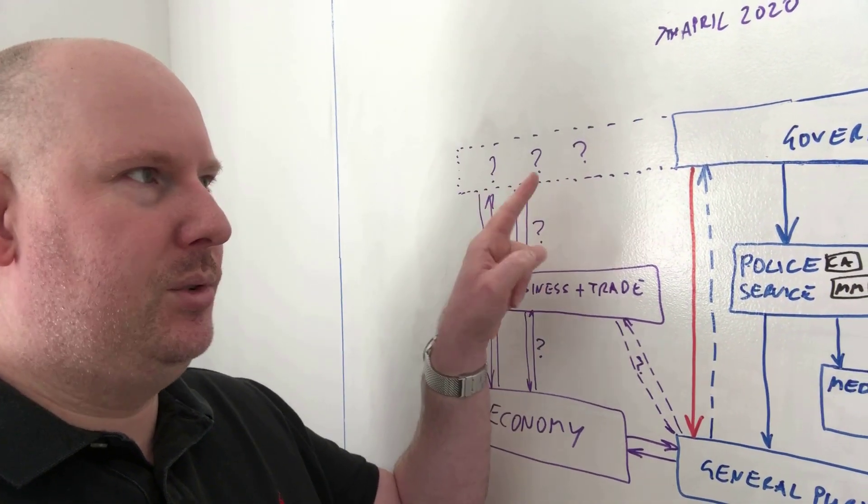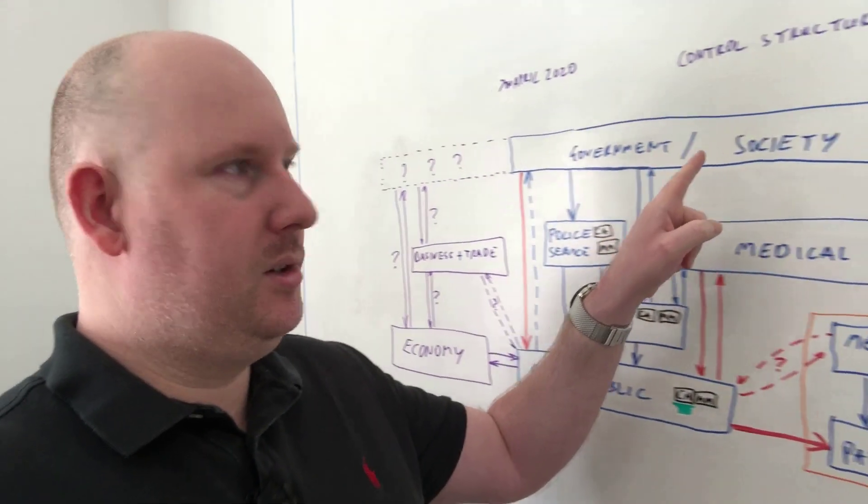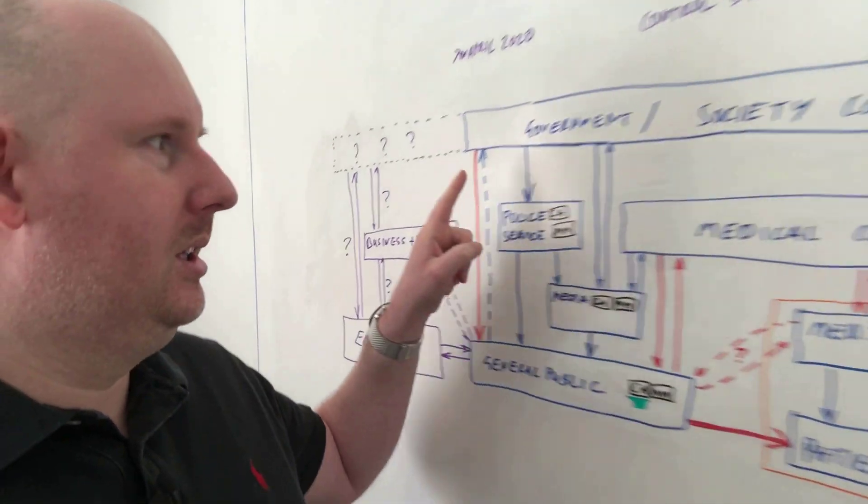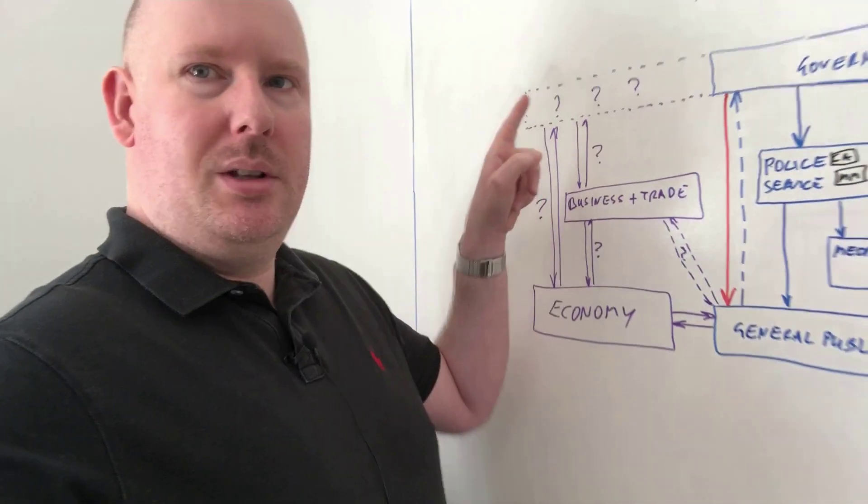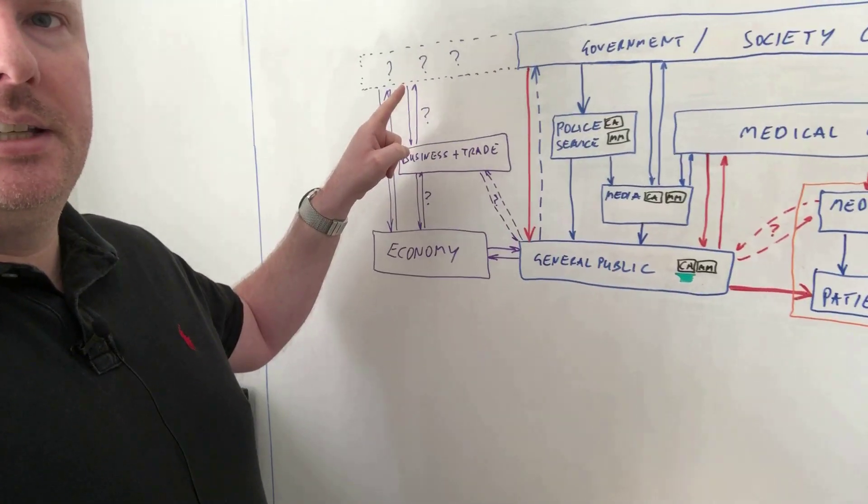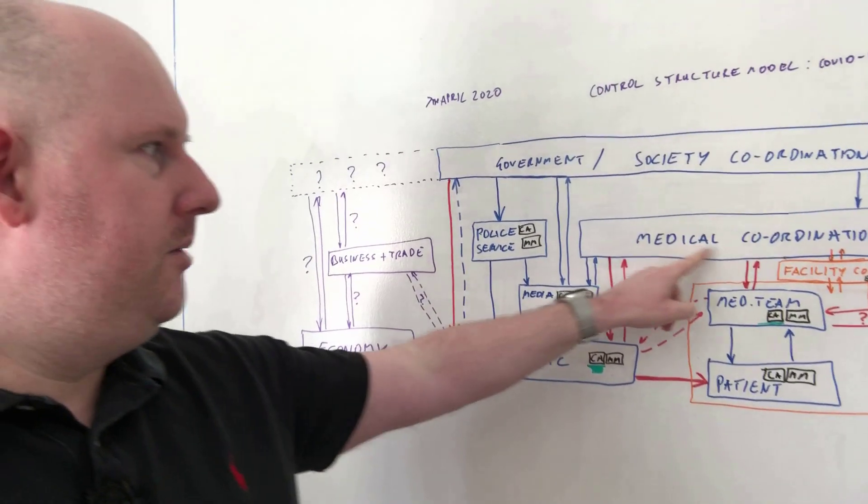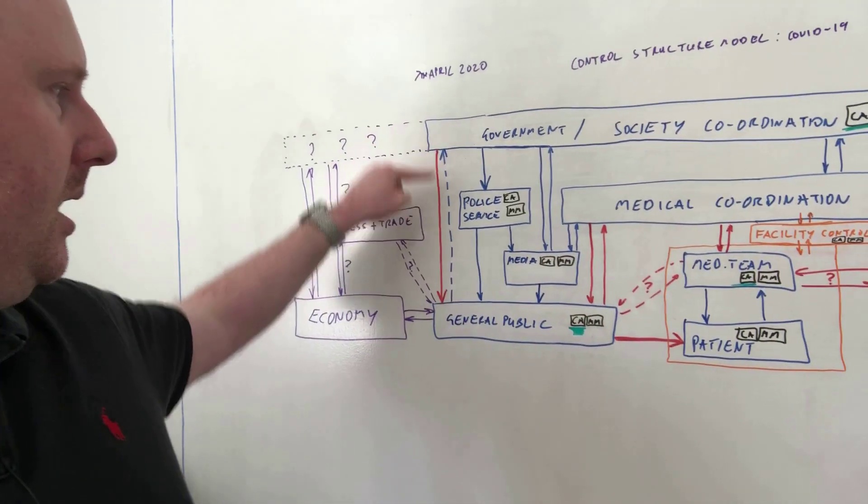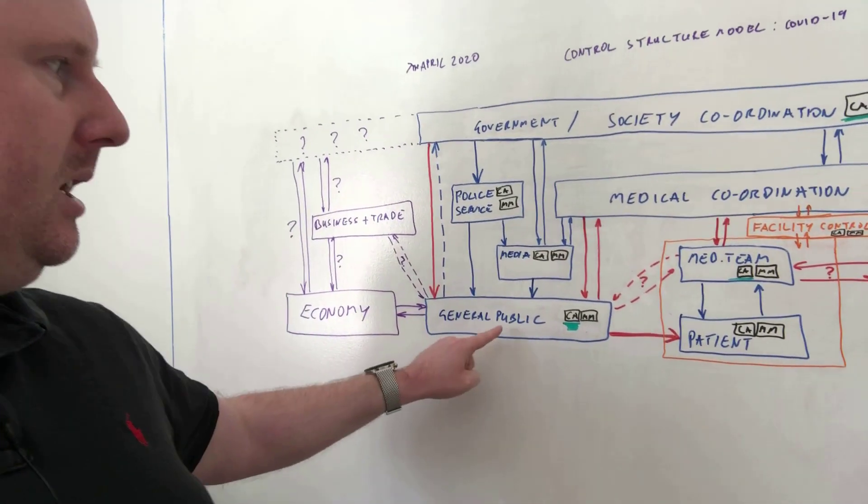You've then also got, well hang on, who or what is in control at these top levels of the economy? Well there's some level of governmental control, but clearly all of this has to be coordinated in some shape or form.